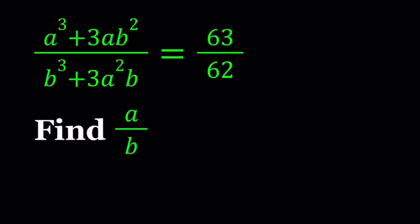Hello everyone. In this video we're going to be looking at a proportion problem. We have a cubed plus 3ab squared divided by b cubed plus 3a squared b equals 63 over 62. And we're going to be finding the ratio a over b. I'll be presenting two methods. Let's start with the first one.